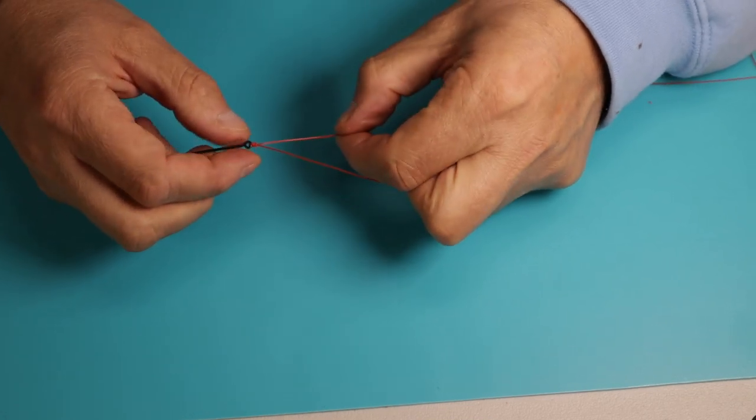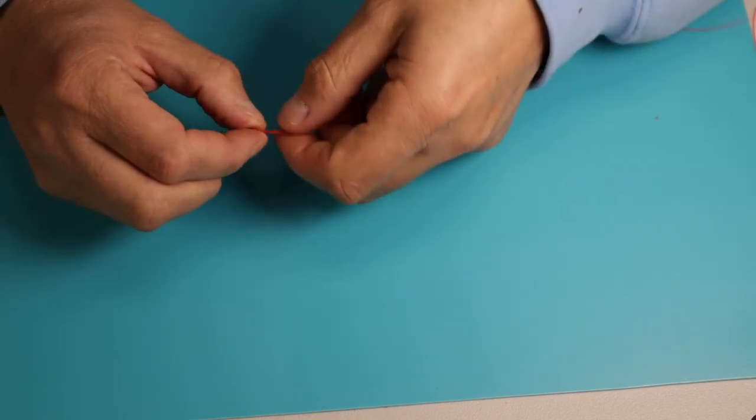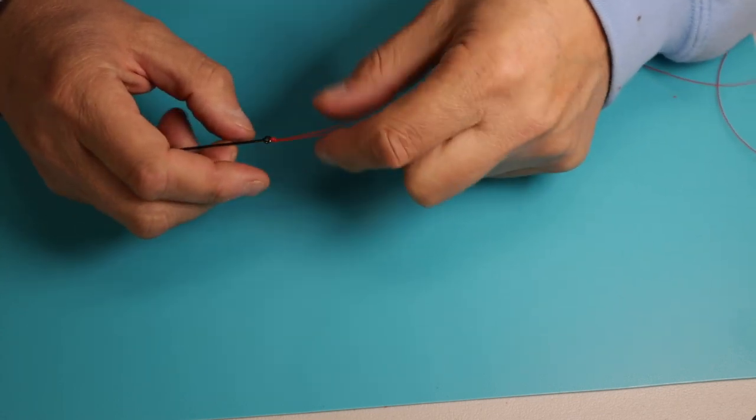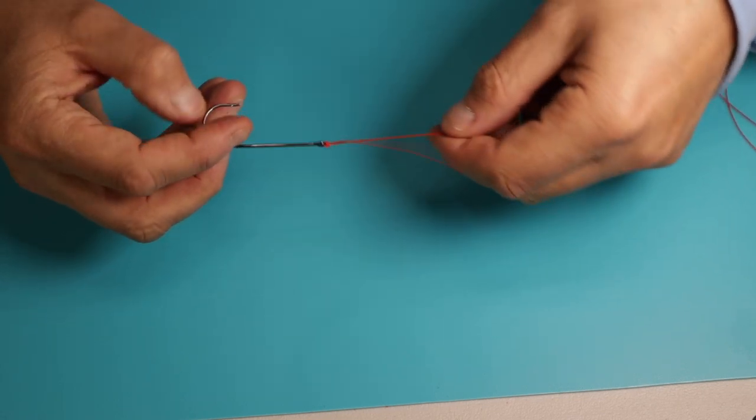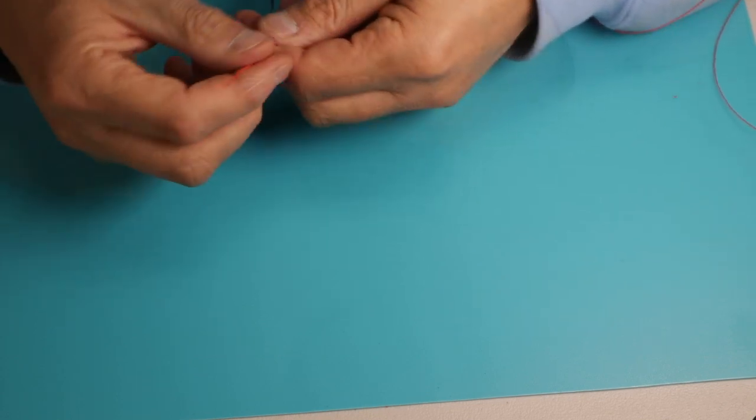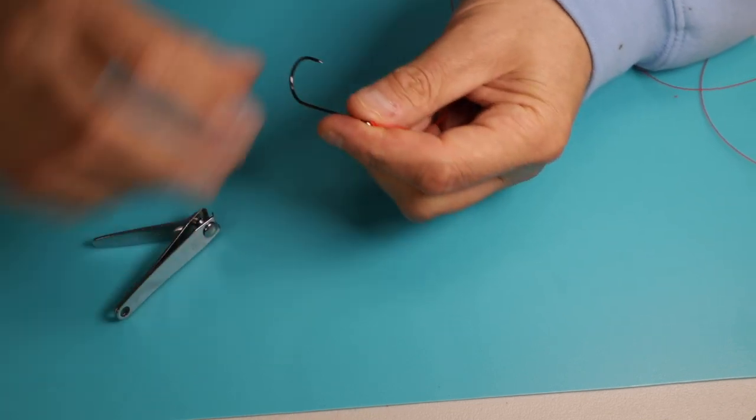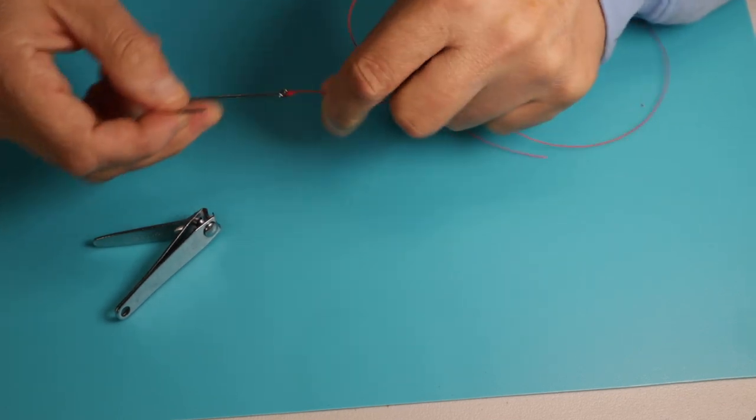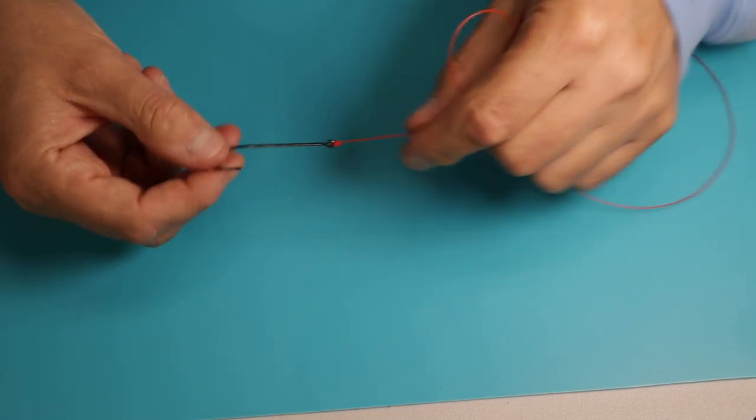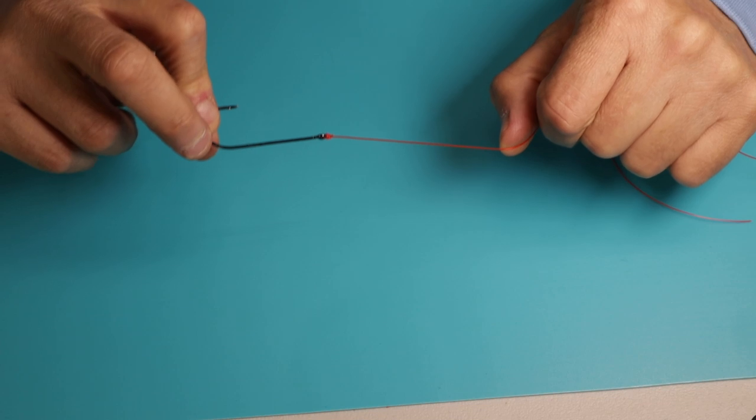Like the uni knot, the tag end comes out parallel with the main line, so again this is another useful knot for bait presentation. Trim off the tag end, and that is a three turn grinner.